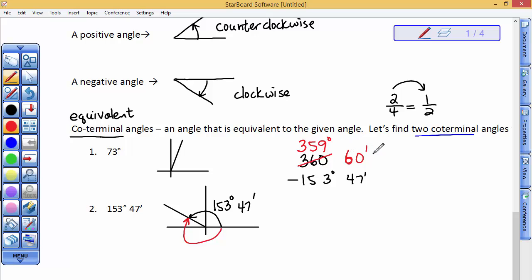So, if I want to write the coterminal angle to this in degrees and minutes, I can't think of this 360 degrees. I have to think of it as 359 degrees and 60 minutes. Now, when I subtract those, 60 minus 47 is, 10 minus 7 is 3, 5 minus 4 is 1, so I've got 13 minutes. 9 minus 3 is 6, 5 minus 5 is 0, 3 minus 1 is 2. I have 206 degrees, 13 minutes. Remember, it's negative. I'm going to do this in red right here. It's negative because it's this clockwise rotation.